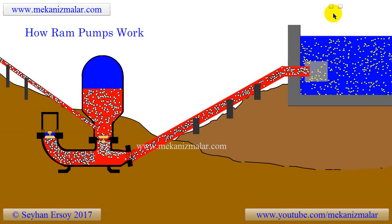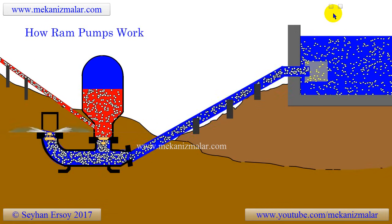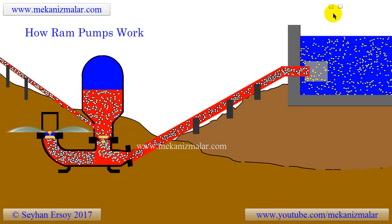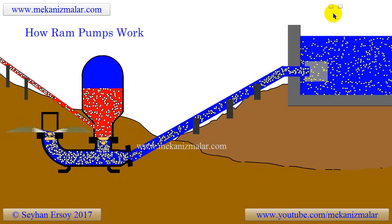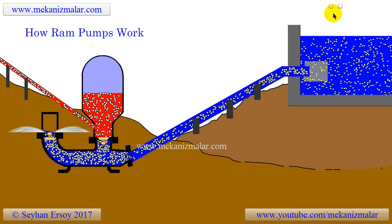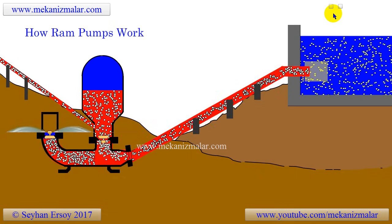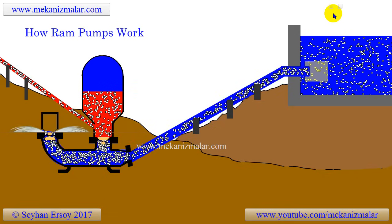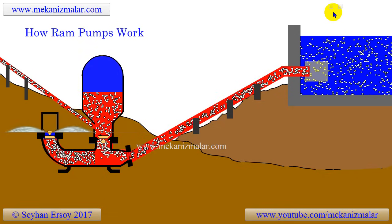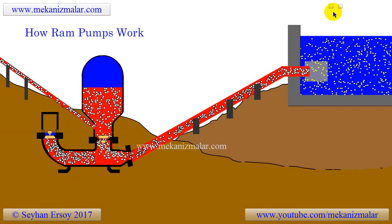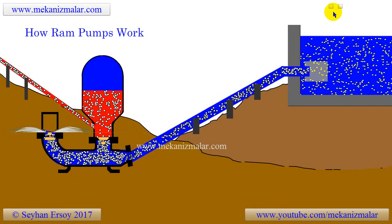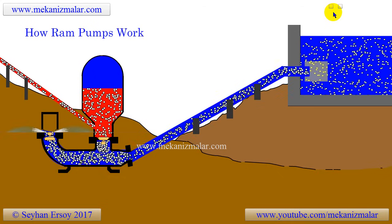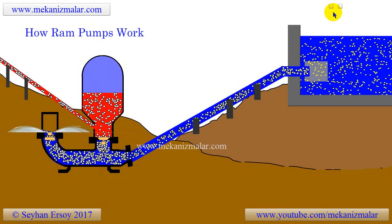The simulation shown here shows how the ram pump works, but how it works and discards so much water needs explanation. Ram pumps use the potential energy of flowing water to pump the water to higher elevation.